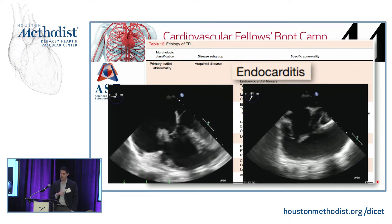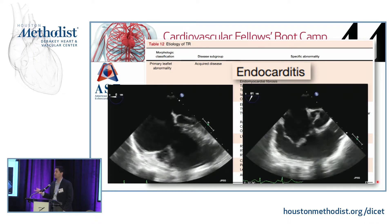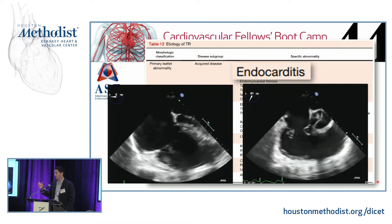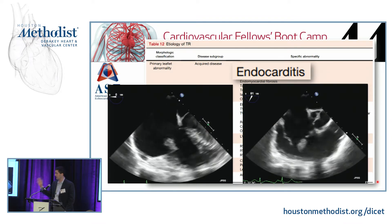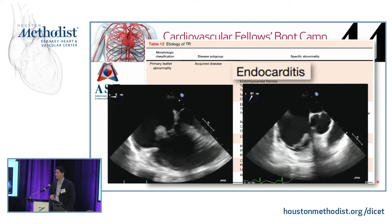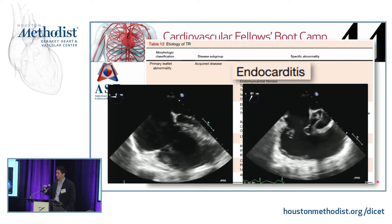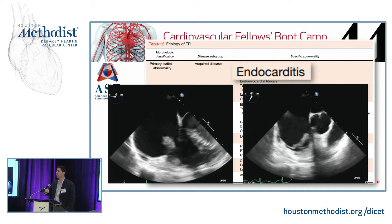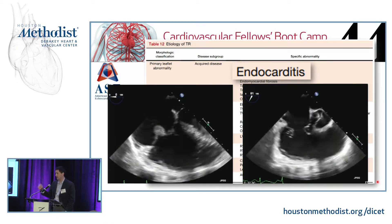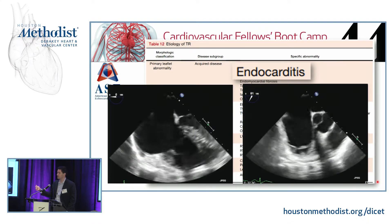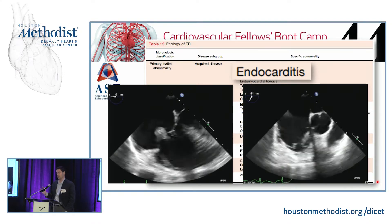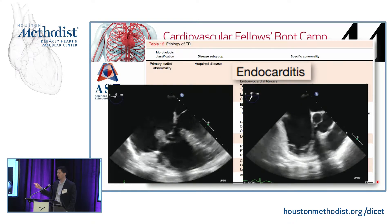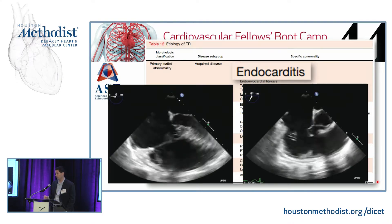Here are examples of TR from a primary leaflet abnormality. This patient has endocarditis of the anterior leaflet of the tricuspid valve and a flail leaflet due to a vegetation on the anterior leaflet. The left view is approaching a midesophageal four-chamber. In that view, the leaflet near the septum is the septal leaflet, and the other leaflet is usually the anterior leaflet. In the RV inflow-outflow view on the right, the leaflet furthest to the left is usually the posterior leaflet. You can also see a big hole where there's no valve coaptation from the flail leaflet.